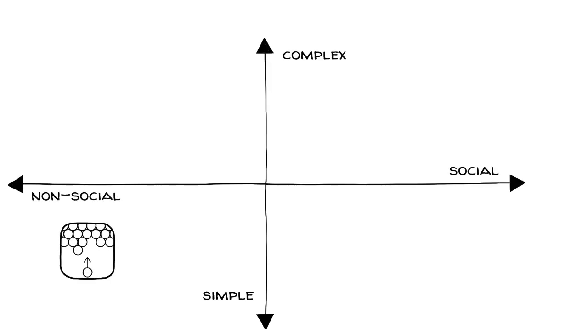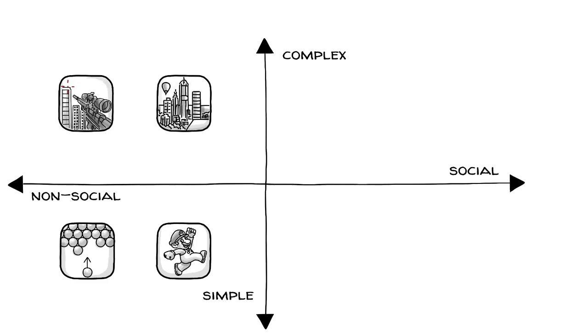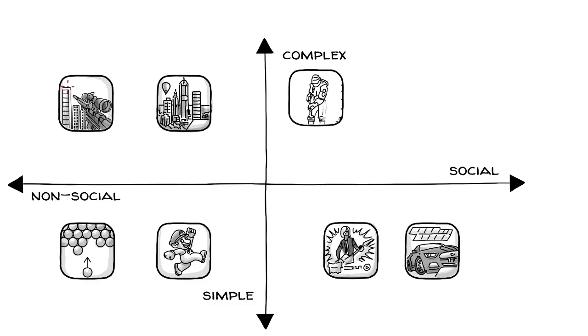Simple single-player games include puzzles and jump and run games like Super Mario. Complex, non-social games include shooters like Far Cry or simulations like SimCity. Then there are simple multiplayer games like Guitar Hero or Need for Speed, and games that are complex and social such as Halo, Minecraft, or Among Us.